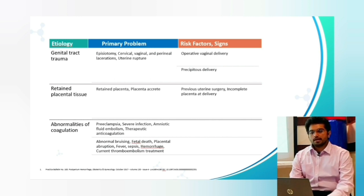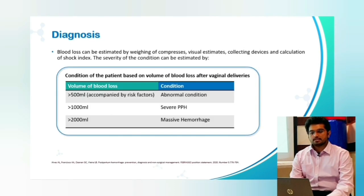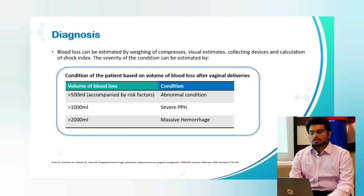Blood loss can be estimated by weighing of compresses or cloth, visual estimation, collecting devices, or calculation of the obstetric shock index (OSI). The severity can be estimated by blood loss: more than 500 ml is abnormal, more than 1000 ml is defined as severe postpartum hemorrhage, and more than 2000 ml is defined as massive hemorrhage.